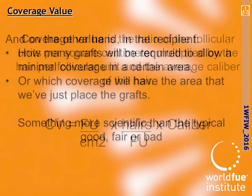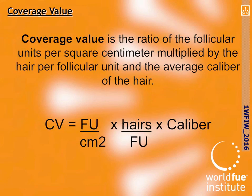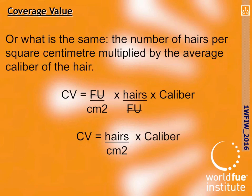Coverage value is the ratio of the follicular units per square centimeter, multiplied by the hair per follicular unit, multiplied by the average caliber of the hair — or what is the same, the number of hairs per square centimeter multiplied by the average caliber of the hair.